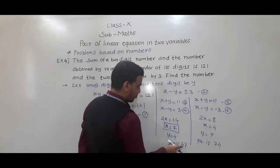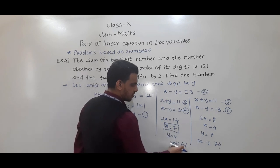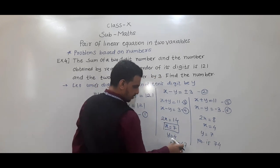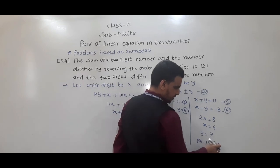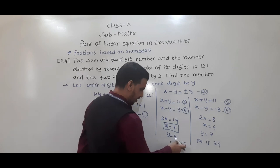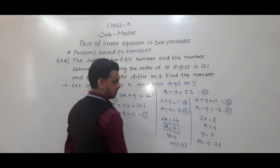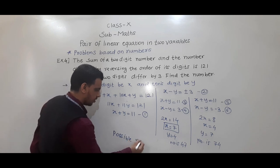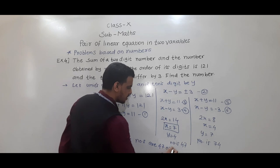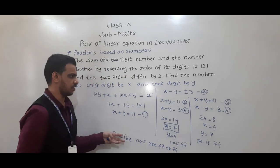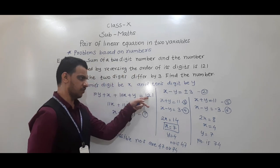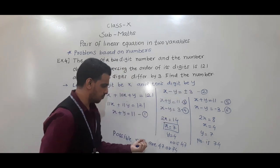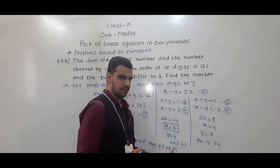You can verify: 47 plus 74 is 121, and the difference between the digits 7 and 4 is 3 in both cases. In 47, y (4) is smaller than x (7); in 74, y (7) is greater than x (4). So the possible numbers are 47 or 74 — both answers are correct.